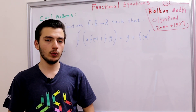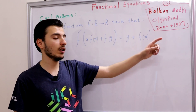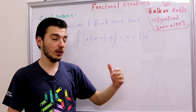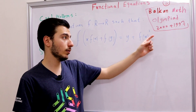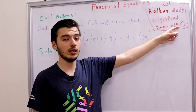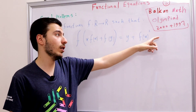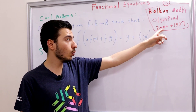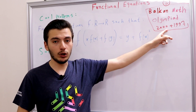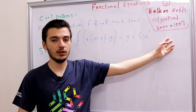Our problem for today is from the Balkan Math Olympiad. There is one funny fact about this problem — it actually appeared in the Balkan Math Olympiad 1997 as problem 4, and it also appeared in the Balkan Math Olympiad 2000 as problem 1. So it was repeated twice in the same olympiad.